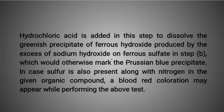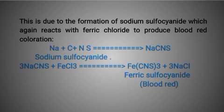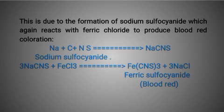In case sulfur is also present along with nitrogen in the given organic compound, a blood red coloration may appear while performing the above test. This is due to the formation of sodium sulfocyanide, which again reacts with ferric chloride to produce blood red coloration. Sodium, carbon, nitrogen, and sulfide react to give sodium sulfocyanide. 3 sodium sulfocyanide plus ferric chloride react to give ferric sulfocyanide plus 3 sodium chloride — producing the blood red color.